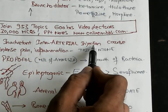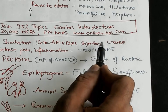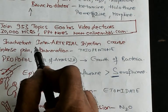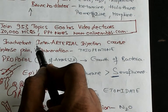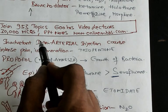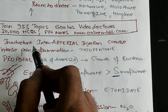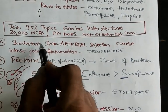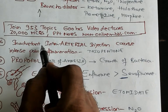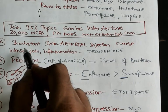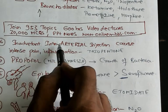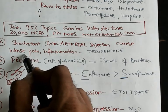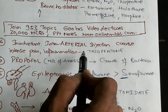Inadvertent intra-arterial injection — inadvertently, without knowing, if you give thiopentone intra-arterially it leads to intense inflammation. That is what you should remember about inadvertent intra-arterial injection.